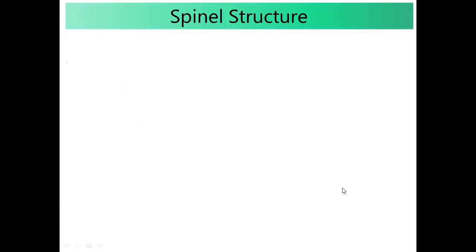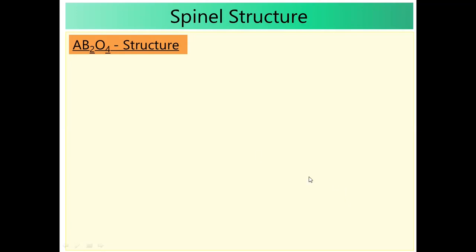Spinal structure: AB2O4 is the formula for spinal. A normally has plus-2 charge, B has plus-3 charge, oxygen has minus-2 charge. One A with +2 and two B with +3 gives total +8 charge. Four oxygen atoms each with -2 charge gives -8. Overall charge is neutral. AB2O4 follows FCC structure. Oxygen is the anion — it follows sphere position. A²⁺ and B³⁺ are cations — they are voids.